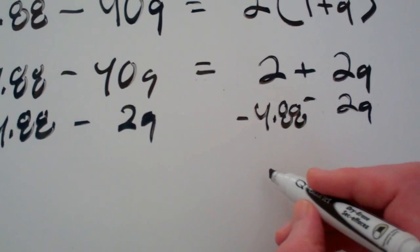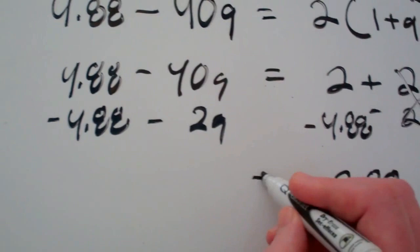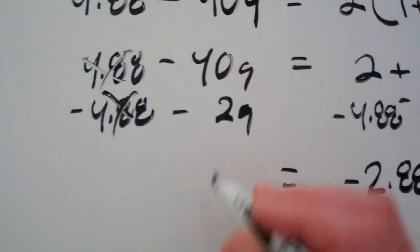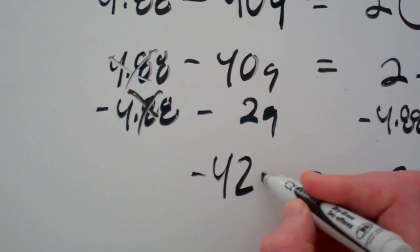Okay. So if we do that, 2 minus negative 4.88 gives you negative 2.88 on this side. Those obviously cancel out. And that equals over here. These obviously cancel out. And so now we have negative 40 minus 2. So that gives you negative 42G.